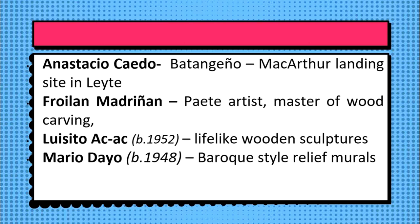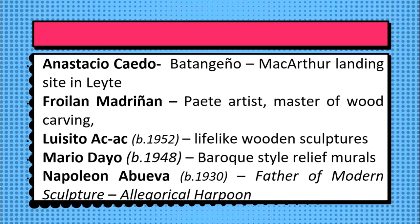One of Guillermo Tolentino's most well-known students was Napoleon Abueva, who is from Tagbilaran, Bohol. He is credited as the pioneer of modern sculpture in the Philippines and is sometimes referred to as the father of modern sculpture in the Philippines. Abueva's sculptures often convey a feel of playfulness, fluidity, and fulfillment. He has worked with various materials such as stone, metal, and concrete, but still prefers wood, particularly molave and other hardwoods. His masterpiece, the Allegorical Harpoon, is considered one of his best abstract sculptural works.